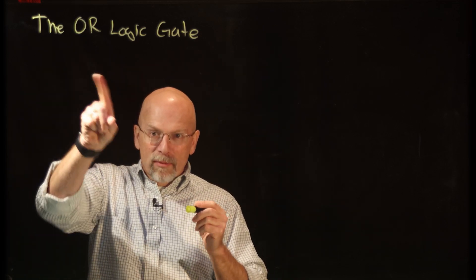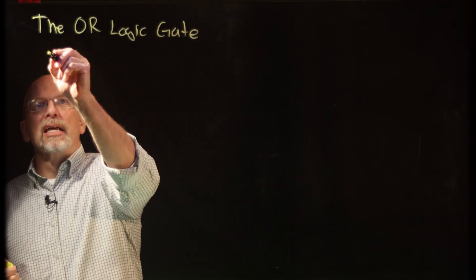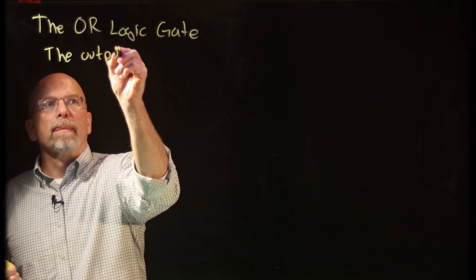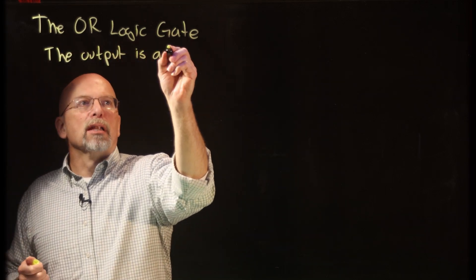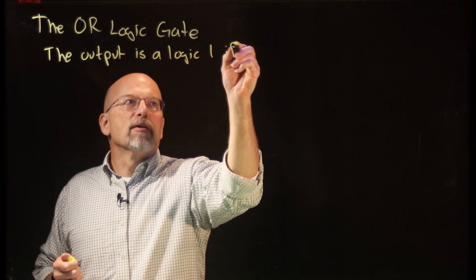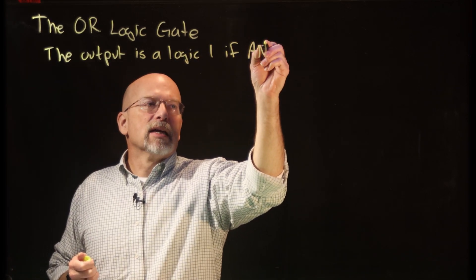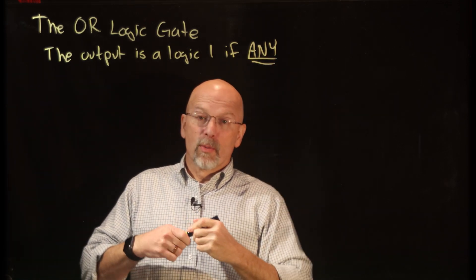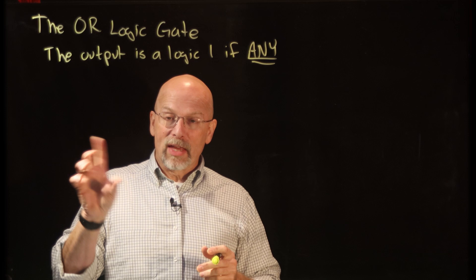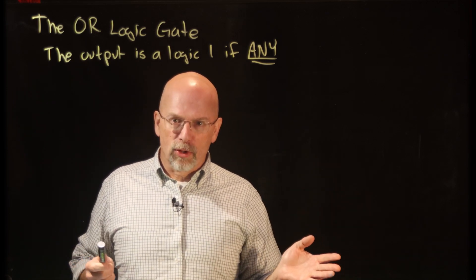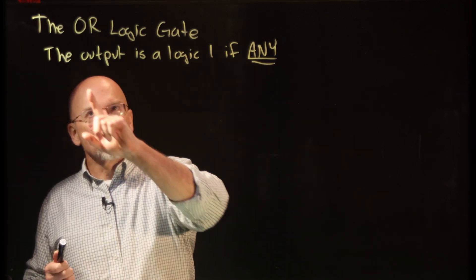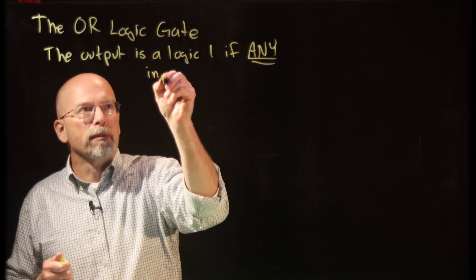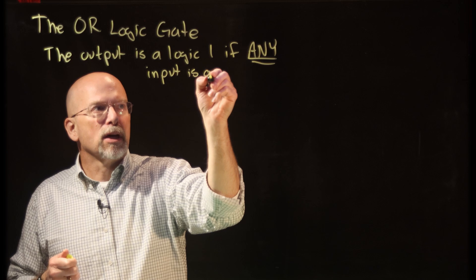The algorithm for the OR gate is that the output is a logic one if any input is a logic one. Remember, when we talked about the AND gate, we said that the output is a logic one if all inputs are a one. In this case, the output is a logic one if any input is a logic one.